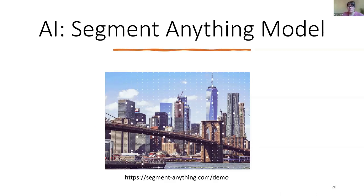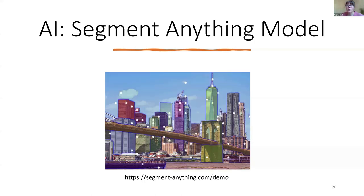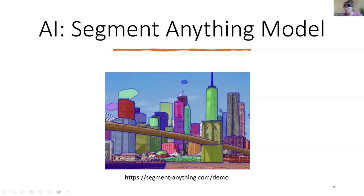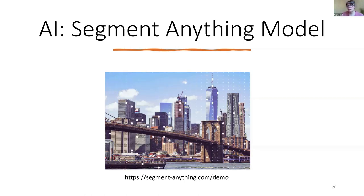To give you an idea of what a segmentation model is: this model was released by Meta AI, formerly Facebook, about a month ago and has just exploded — it's one of the most powerful segmentation models in AI. It was trained on 10 million images with 1.1 billion masks. In this animation, different colors represent different masks — each is a different segment. It's a generalized model that doesn't need to be retrained; it can work on any image, and the code is open source with weights available to use in your own workflow.